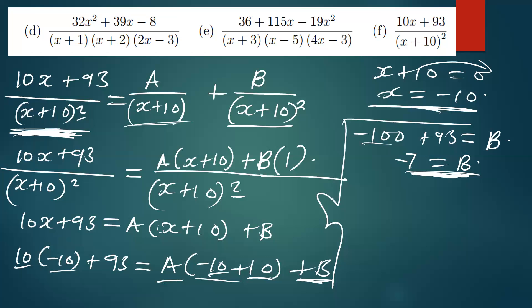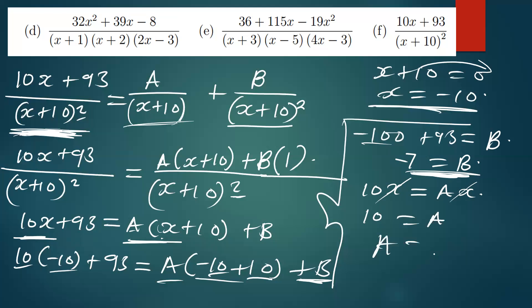To find A, we compare coefficients. Looking at the x terms: on the left side we have 10x, and on the right side the only x term is A times x. Dividing both sides by x, x cancels and we get 10 equals A. So the value of A is 10. We replace A with 10 and B with negative 7.